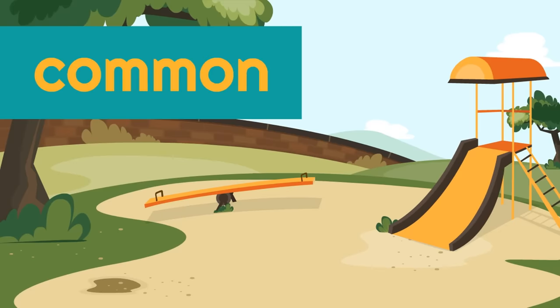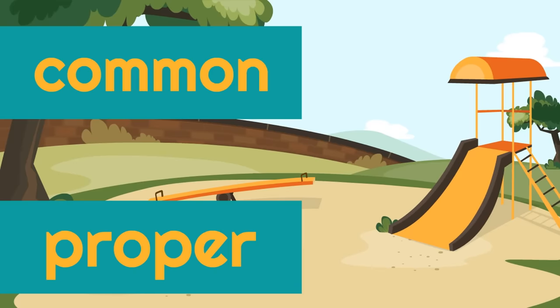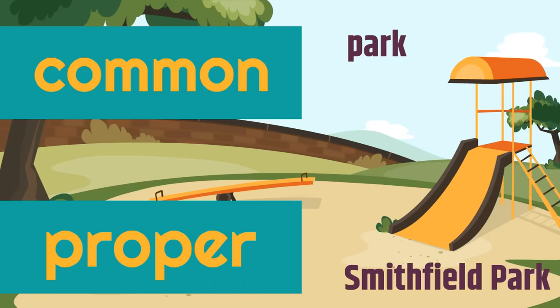Here's another one. Here we have a picture of a park. Park would be the common noun — it's the type of person, place, or thing. Now, let's say this park is called Smithfield Park. Smithfield Park would be the proper noun. It is the specific person, place, or thing that this is. It is a park — that's the common noun. And the proper noun is Smithfield Park.